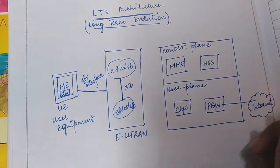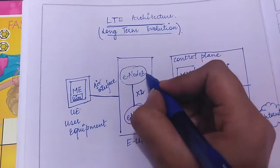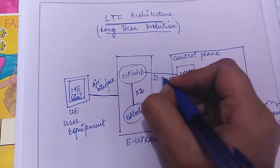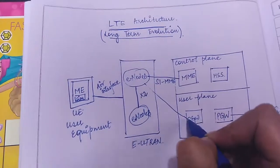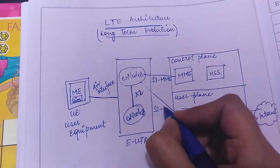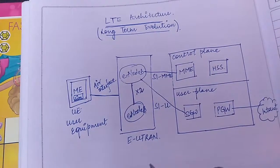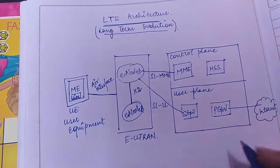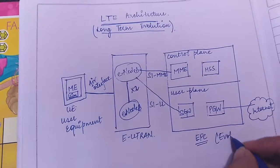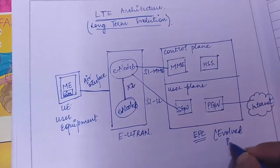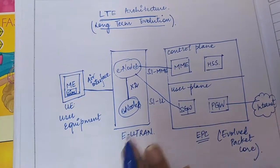Now in order to communicate between the e node B to the MME we have an S1 MME interface. And in order to communicate between the e node B with the serving gateway we have S1 U interface. So this part includes S1 interface in order to communicate between EUTRAN to the EPC evolved packet core.